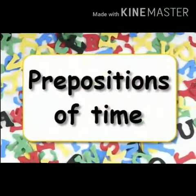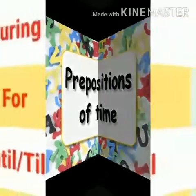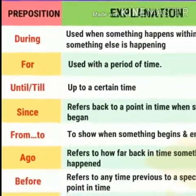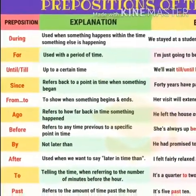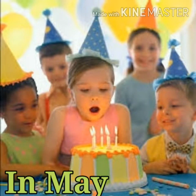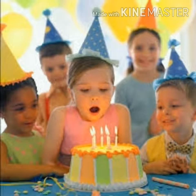Prepositions of time tell us when something happened, happens, or will happen. Words like at, on, in, after, before, during, about, around, and throughout are some prepositions of time. See the example: Veda celebrates her birthday in May. Here, the word 'in' is indicating the month of May — the timing of that action, celebrating a birthday.